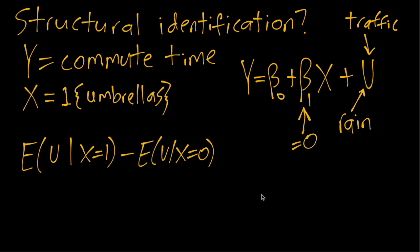Now we said earlier when people are carrying umbrellas it's probably because it's raining and rain is part of our structural error term u. So in other words u will be some larger positive number when x is equal to 1. So this will be some higher number even on average. Whereas if x is zero, people are not carrying umbrellas, that suggests it's not raining.